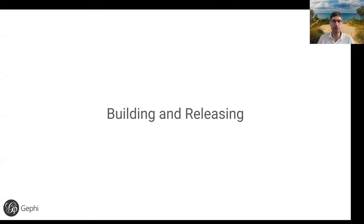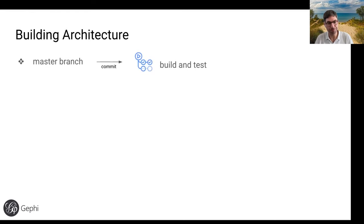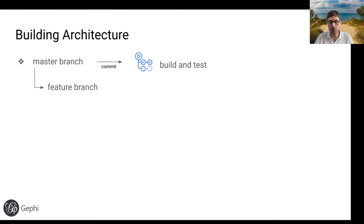Now let's cover how Gephi is built and released. The building architecture is fairly simple and automated. We have a master branch — when you commit to it, a GitHub Action called 'build and test' is triggered. It builds Gephi and runs all tests. If you develop a new feature, you use a feature branch and do a pull request, which also runs the tests. If successful, the pull request can be merged. That's the day-to-day master branch and feature branch workflow.